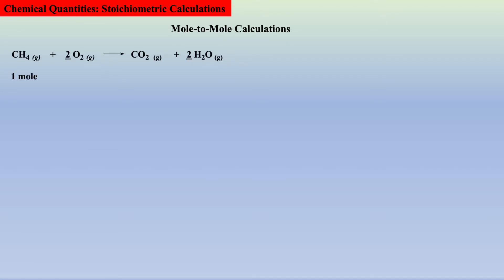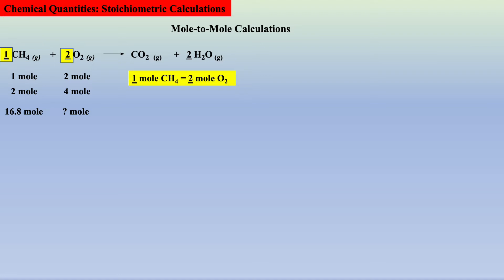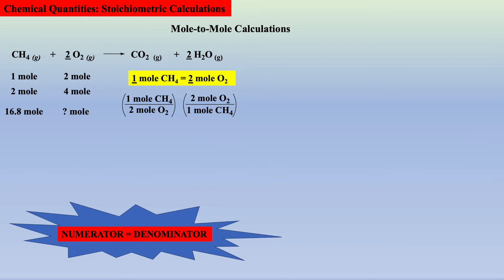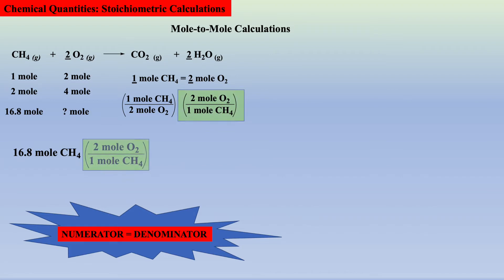Now let's begin the transition to solving stoichiometric calculations via mole-to-mole conversions. As we stated previously, one mole of methane requires two moles of oxygen, or two moles of methane requires four moles of oxygen. So let's work a problem we can't easily do in our head: if 16.8 moles of methane are reacted, how many moles of oxygen are required? The equivalent statement that allows conversion from moles methane to moles oxygen is derived from the stoichiometric coefficients: one mole methane requires two moles oxygen. Two conversion factors can be derived from any equivalent statement — just remember the numerator must equal what's in the denominator. Starting from the given value, we multiply by the conversion factor that allows moles methane to cancel and gives moles oxygen.